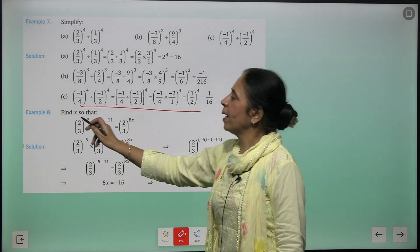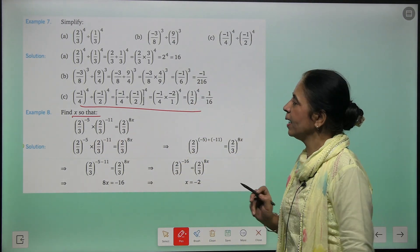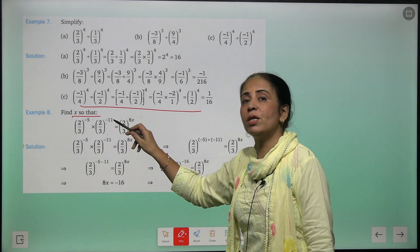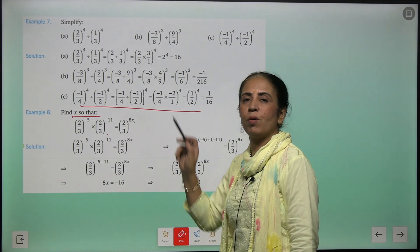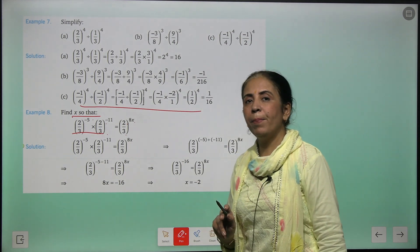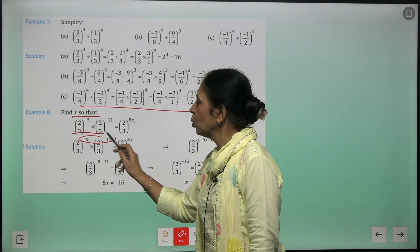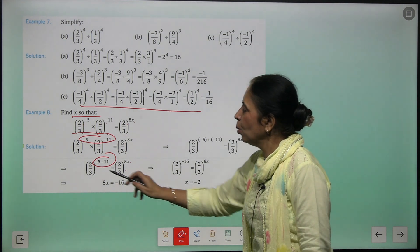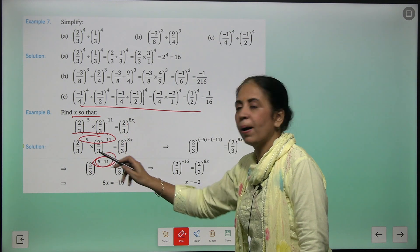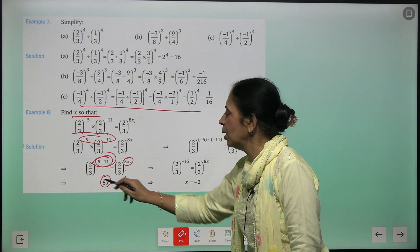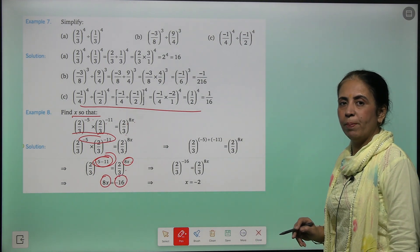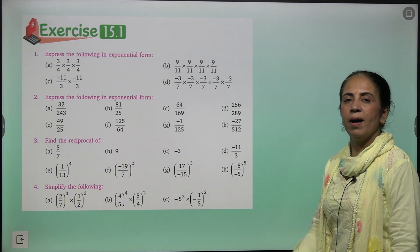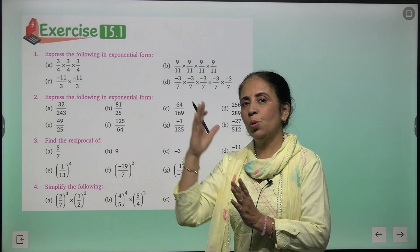Next question: find the missing value x. Given (2/3)^(-5) × (2/3)^(-11) = (2/3)^(8x). On the left side, bases are same so add powers: -5 + (-11) = -16. So (2/3)^(-16) = (2/3)^(8x). Since bases are equal, powers are equal: 8x = -16, giving x = -16/8 = -2.